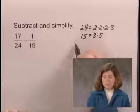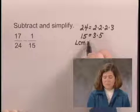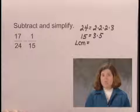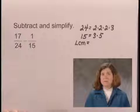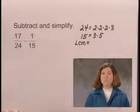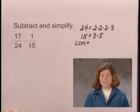So the least common multiple of 24 and 15 is the product of each of the prime numbers that appears in these factorizations the greatest number of times that it appears in any one factorization.